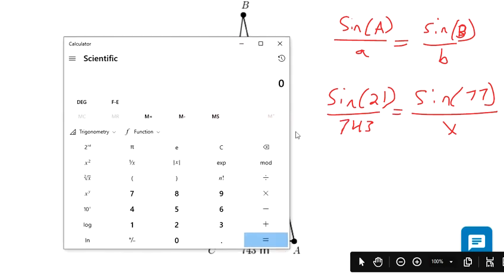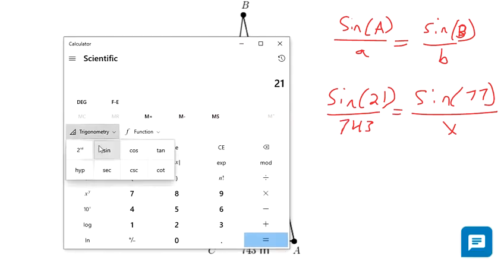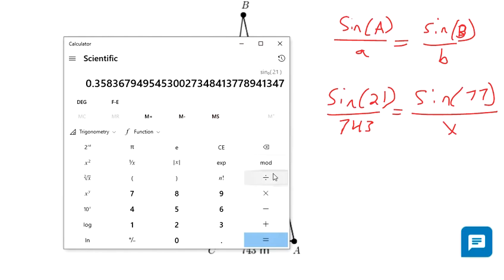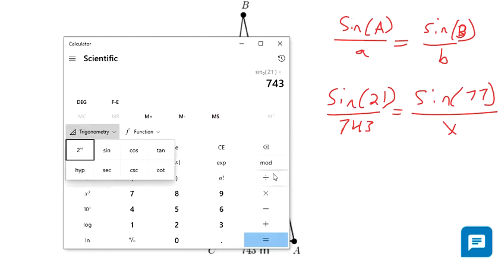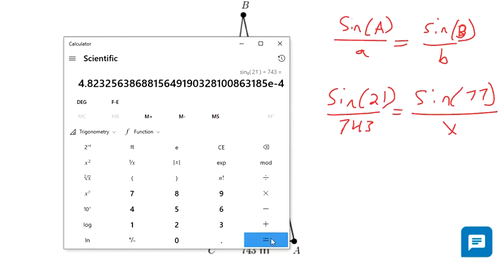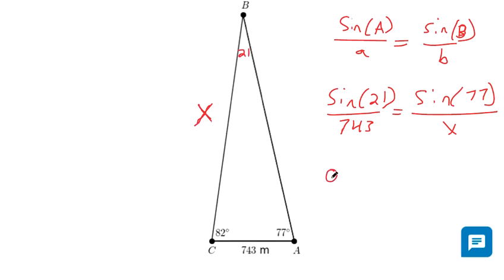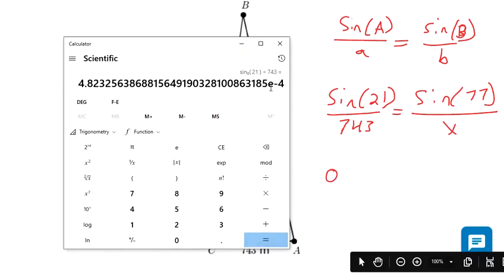Find out what the left side is equal to. 21 trig sine divided by 743. That makes, oh man, zero. So in case you haven't seen this before, this is like even shorter notation than scientific notation. This is times 10 to the negative 4th.